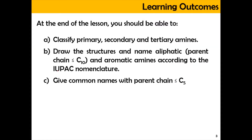In this video, we're going to look into the classification of primary, secondary, and tertiary amines, as well as how to draw the structure and name the aliphatic amine — which is the parent chain less than 10 carbons — as well as the aromatic amine, according to IUPAC nomenclature. Also, we're going to give the common name with the parent chain less than 5 carbons.